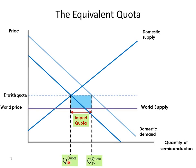Here is the quantity which will be supplied domestically under the quota. If we add to that the amount which is imported, here is the quantity which is demanded or consumed under the quota. The equilibrium is exactly the same, and the price of the product will be the same.